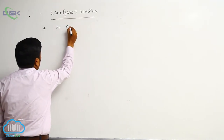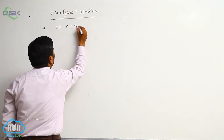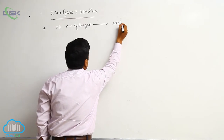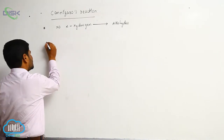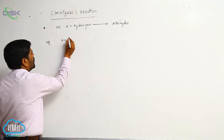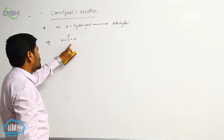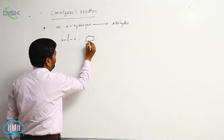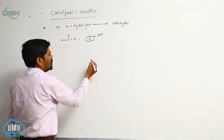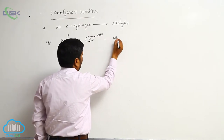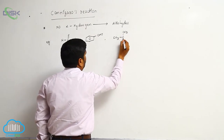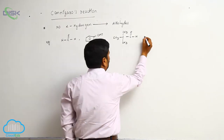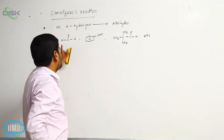The primary condition is: no alpha hydrogen-containing aldehydes are required. Examples: first, formaldehyde — it has just the functional group, no alpha carbon and no alpha hydrogen. Second, benzaldehyde. Third, trimethylacetaldehyde. These are the main compounds involved in the Cannizzaro reaction.